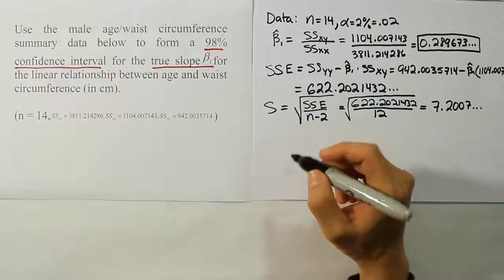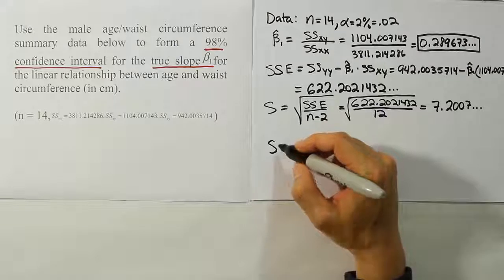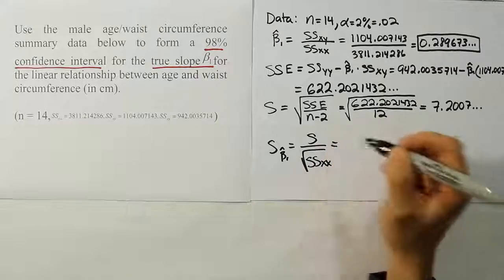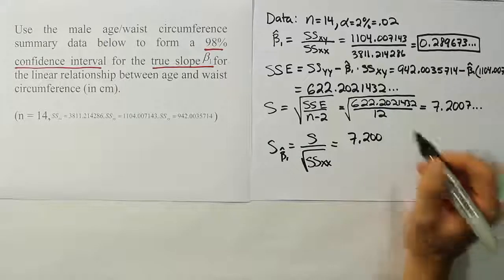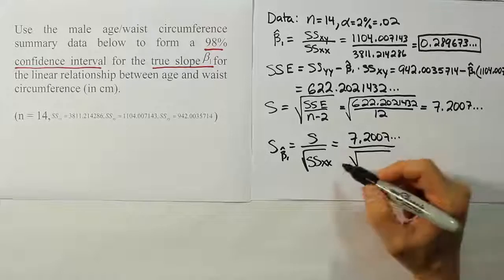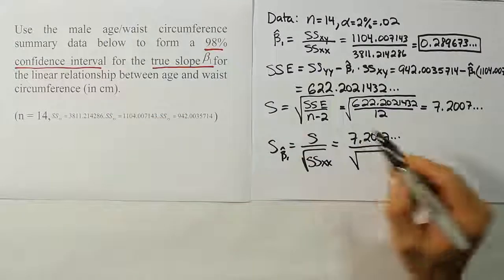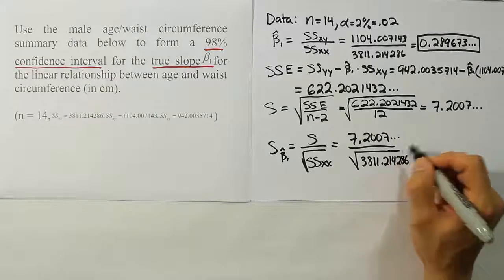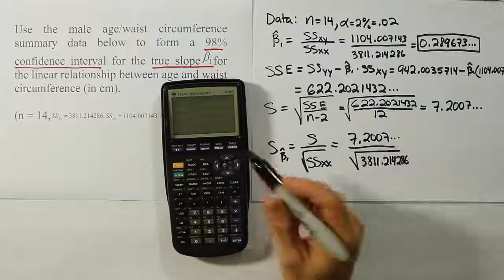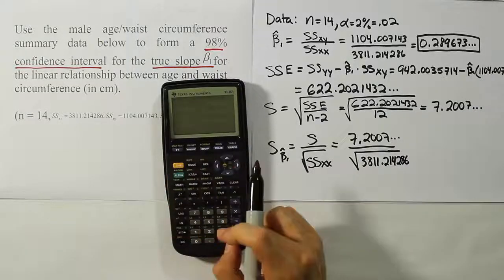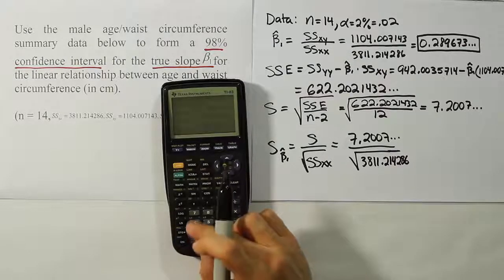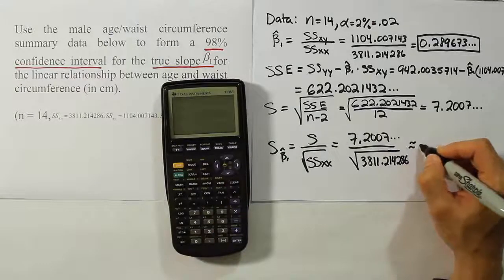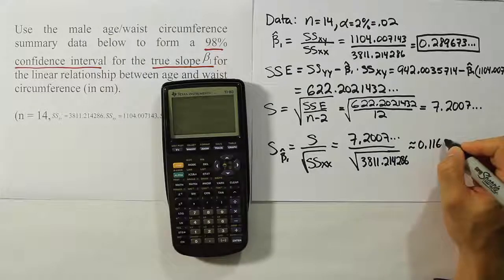Now, that's your S value. In order to come up with the ever-important next step, which is the standard error for beta1 hat, I have to take that S value and divide it by the square root of SSXX. So S here is 7.2007 divided by the square root of the sum of square for the X's, and that value is 3811.214286. I'm just going to hit divide by the square root of 3811.214286, close up my parentheses, hit enter, and I end up with the answer 0.116638.